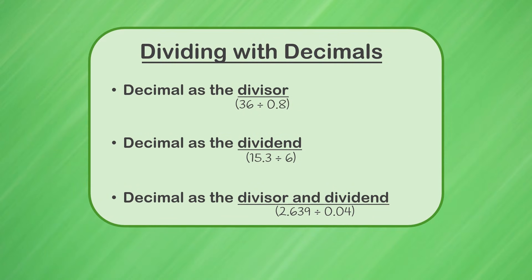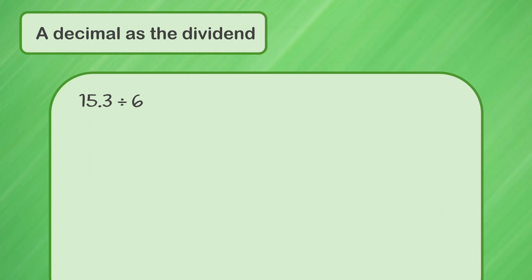Now let's move on to a problem where the dividend is a decimal. Our problem is 15.3 divided by 6. First, we need to check that our divisor is a whole number, and we're lucky it is. Our divisor is 6. We're lucky because that means we don't need to adjust our divisor, and that means we don't need to adjust our dividend, which is 15.3.